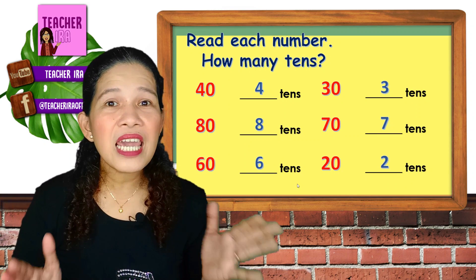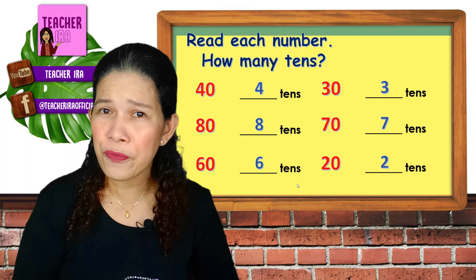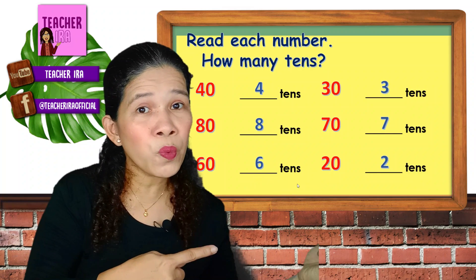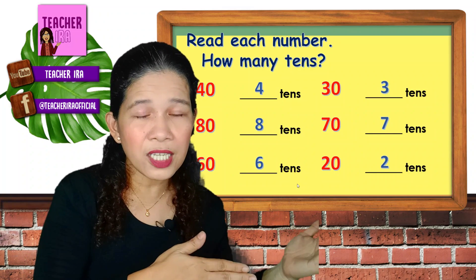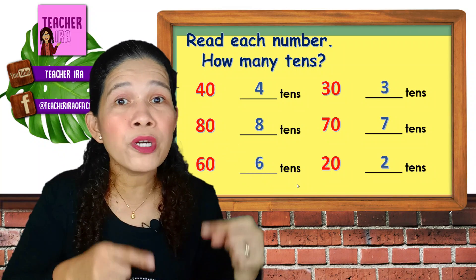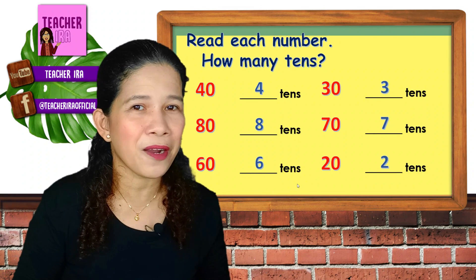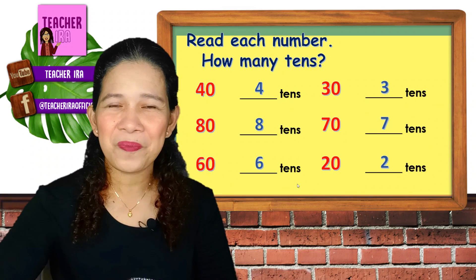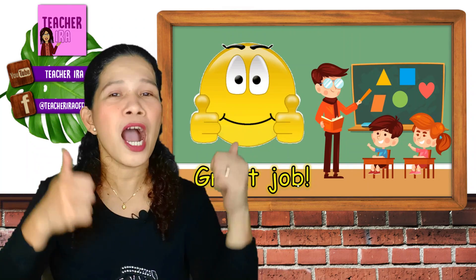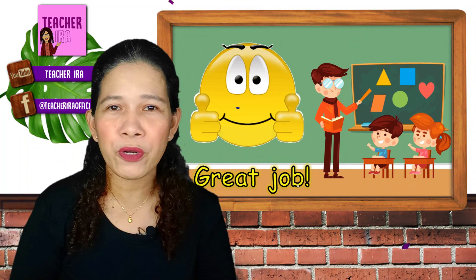Is the place value and value of tens and ones clear with you now? If it's in the ones place, you count it as it is — one, one, one. But when it's in the tens place, all the numbers there are all by tens, so you would know how many tens there are. You are all amazing, children, and you did a great job today. I hope that you will always remember that.